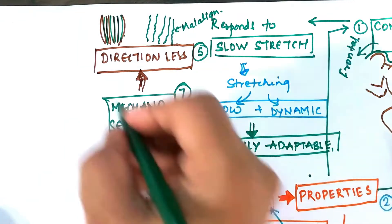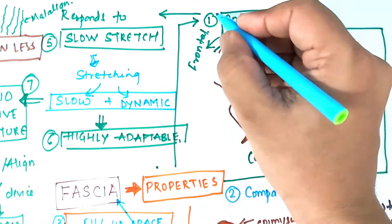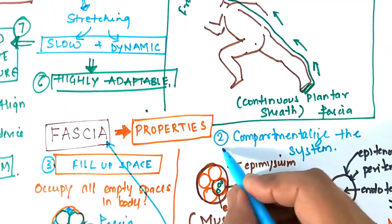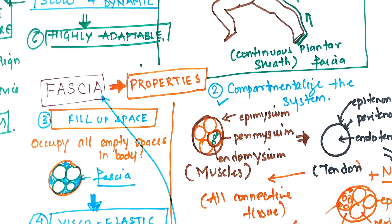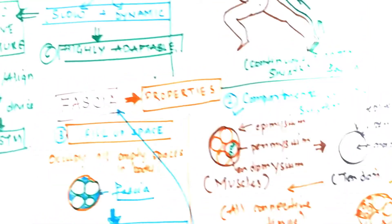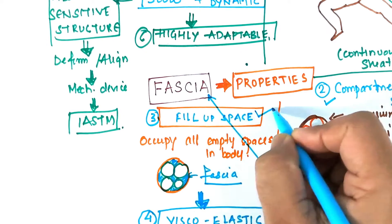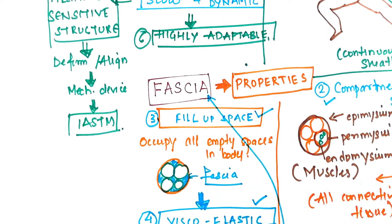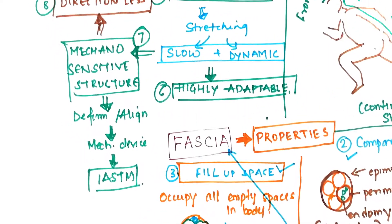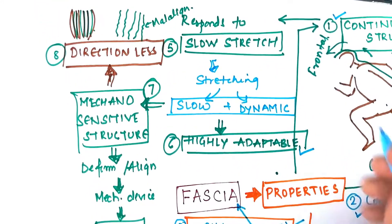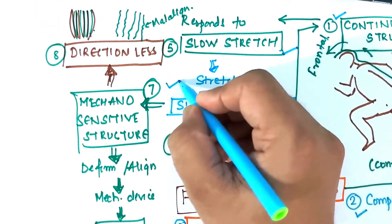So that's the entire properties of fascia: continuous structure, compartmentalize the system, fill up the empty spaces, being viscoelastic, highly adaptable, responsive to slow stretch, mechano-sensitive structure, which is directionless.